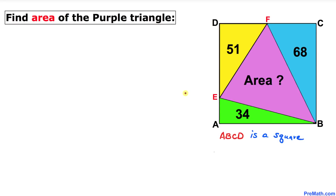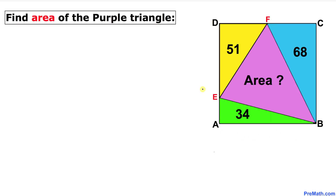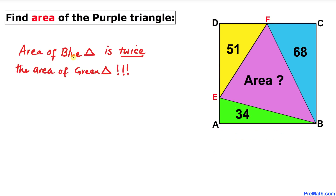Welcome to Pre-Math. In this video tutorial we have square ABCD, such that the area of the green triangle is 34, the area of the yellow triangle is 51, and the area of the blue triangle is 68. We are going to calculate the area of the purple triangle, so let's get started with the solution.